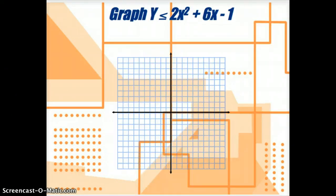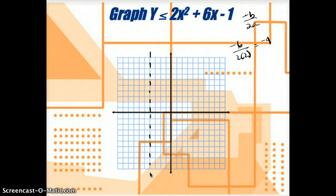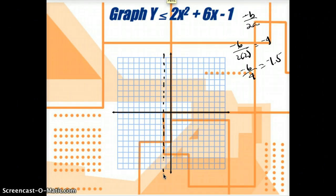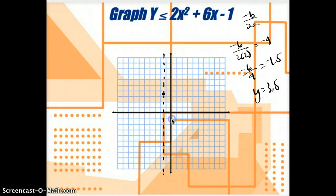Try graphing y is greater than or equal to 2x squared plus 6x minus 1. Start with negative b over 2a: negative 6 over 2 times 2 equals negative 6 over 4 equals negative 1.5. So my axis of symmetry is x equals negative 1.5. Plugging negative 1.5 in gives y equals 3.5, so the vertex is at negative 1.5, 3.5. The y-intercept is at negative 1. Reflecting: the y-intercept is 1.5 units from the axis of symmetry, so reflect 1.5 units to the other side. Since it's greater than or equal to, we use a solid line parabola and shade above.